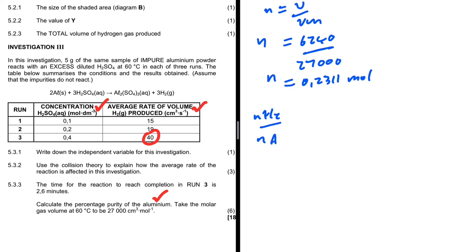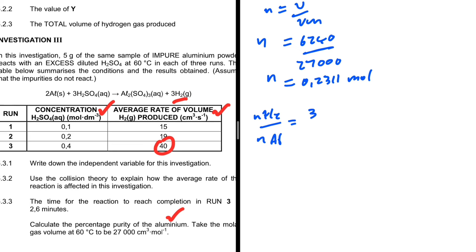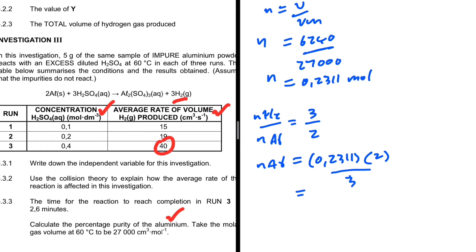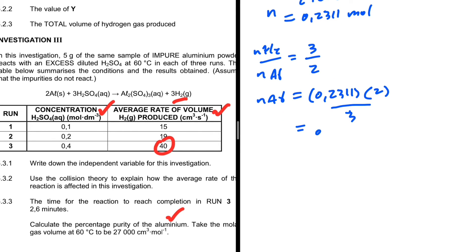From the balanced equation, the ratio of H₂ to Al is 3:2. So moles of Al = moles of H₂ × (2/3) = 0.2311 × 2 / 3 = 0.1541 moles of aluminium. These are the moles of pure aluminium that reacted.